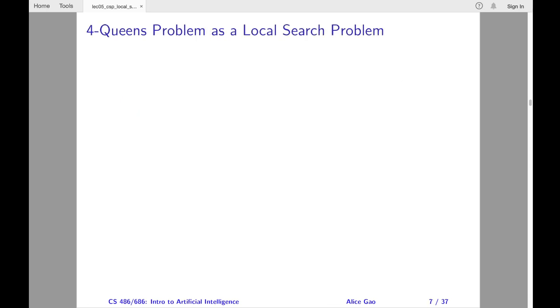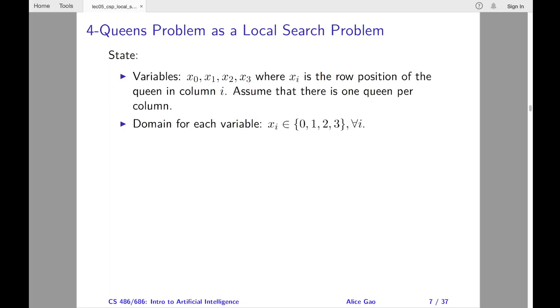Let's take the four queens problem and formulate it as a local search problem. First, I will define a state. The state contains variables and their domains. The definition of the variables is the same as before. We assume that there's one queen per column, and we'll keep track of the row position of each queen. The domains are also the same as before.